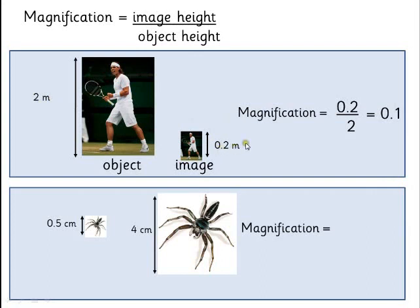And if we do it with the spider to make a big picture of a spider, we've gone from 0.5 to 4, so the magnification is the image height divided by the object height which gives us a magnification of 8. Notice that this number is bigger than 1, it means that the image is bigger than the object so it's magnified. If it's smaller than 1 then it's diminished.